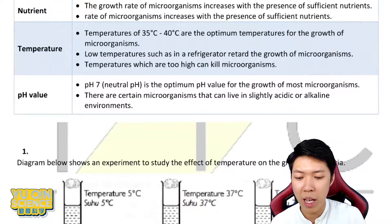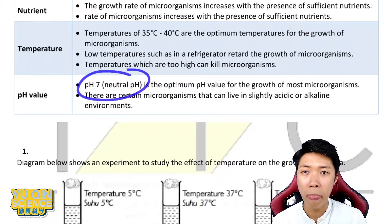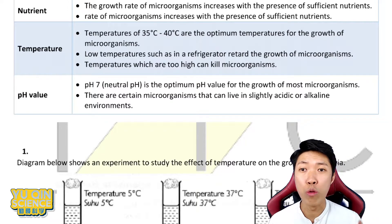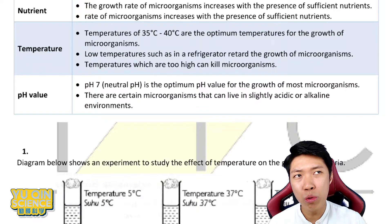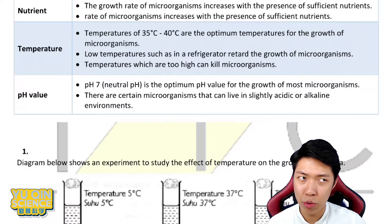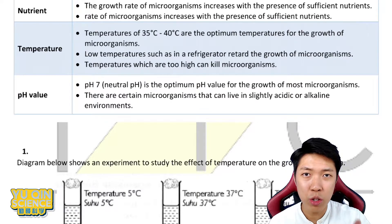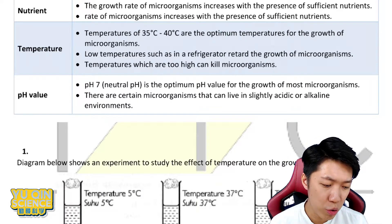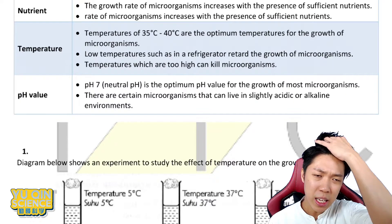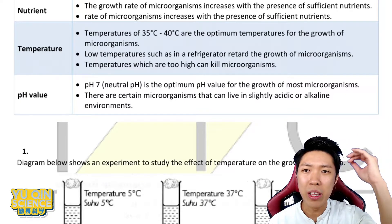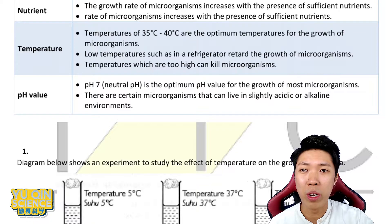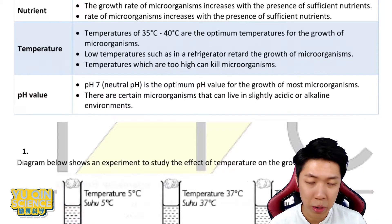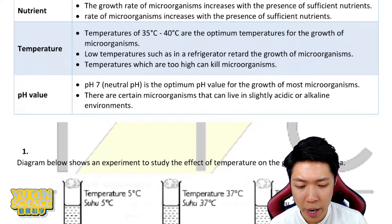Same goes to pH value. pH 7 is what they like the most, which is neutral. Too alkaline, too acidic — no. They prefer neutral. Slight acidity or alkalinity is okay, but not too acidic, not too alkaline, or else they will die.